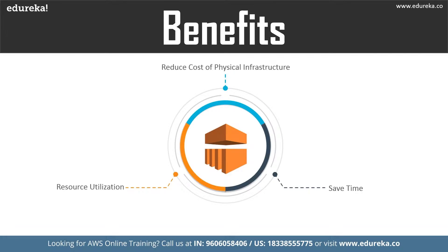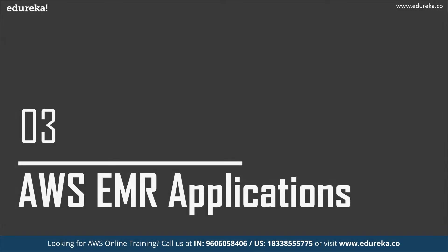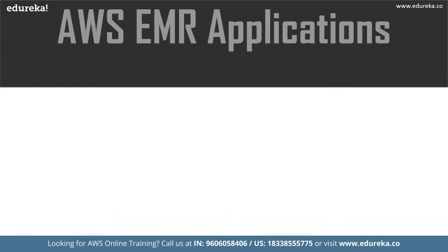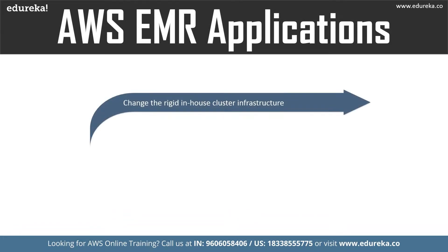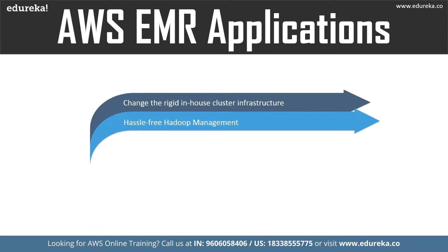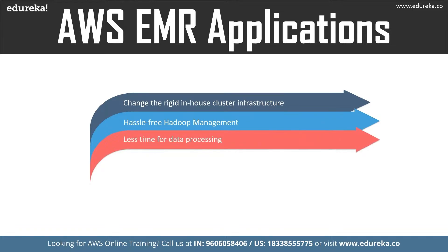Now let us talk about AWS EMR applications. The first application is replacing rigid in-house cluster infrastructure. Running the same complete cluster infrastructure anytime you need to analyze big data, regardless of analysis scope, is a waste of resources. Unless you have configured elastic clustering on your machines, EMR is more resource efficient. The second scenario is hassle-free Hadoop management — currently businesses rely on on-premise Hadoop for their big data processing needs, but with Hadoop fully managed on EMR, you remove the time and complexity of in-house Hadoop management such as upgrading, maintenance, node failures, and operational costs.